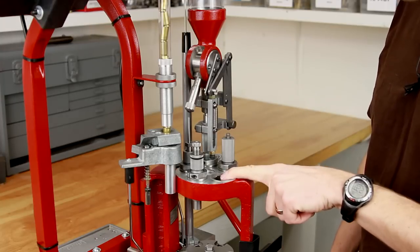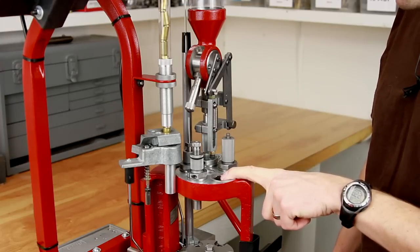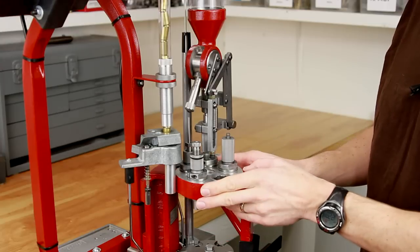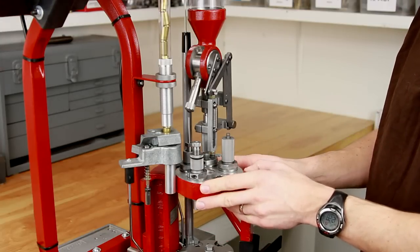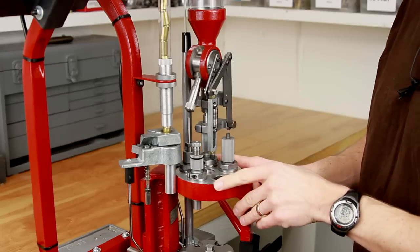In station number four we're going to set up the bullet feed die. This is just one die setup that you can use with the Hornady Lock and Load AP Progressive Press and Hornady Lock and Load Bullet Feed System.